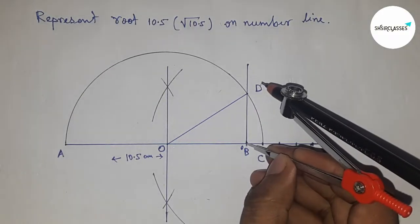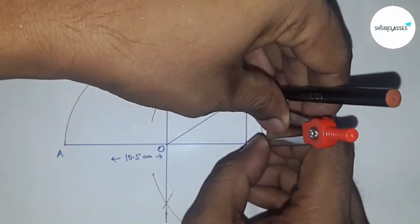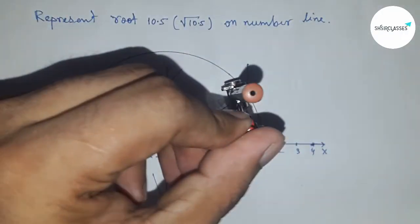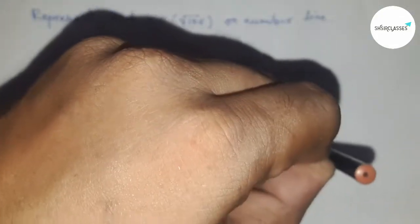Next, take the length BD by compass and draw an arc which cuts the number line at a point.